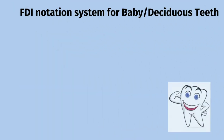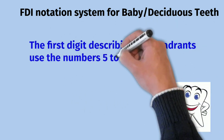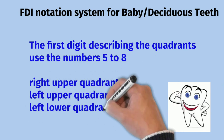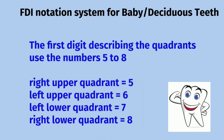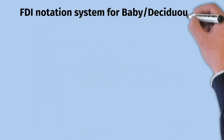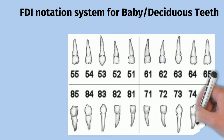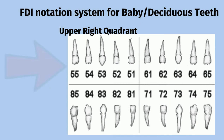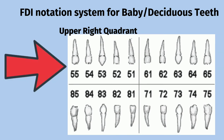The FDI notation system for baby or deciduous teeth is a little bit different from permanent teeth, as the quadrants start from number 5 to number 8. Upper right quadrant is 5, left upper quadrant 6, left lower quadrant 7, right lower quadrant is number 8. So 5-1 refers to the upper right central incisor, 5-2 upper right lateral incisor, 5-3 upper right canine, 5-4 upper right first molar, and 5-5 upper right second molar.